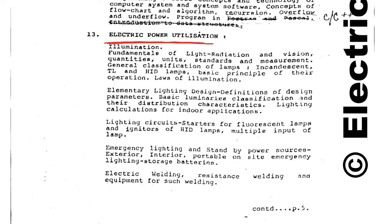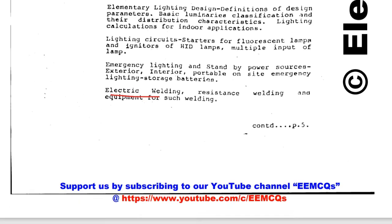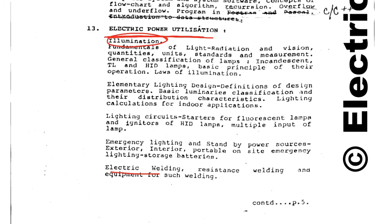Next is Electrical Power Utilization, a very important chapter because it covers the topic of illumination, which is very important from the perspective of practical utilization of electrical energy in public works, public health engineering, and irrigation. Topics like electrical welding, lighting, and all other things included in the utilization chapter must be studied carefully. There will definitely be five to six questions from this chapter.